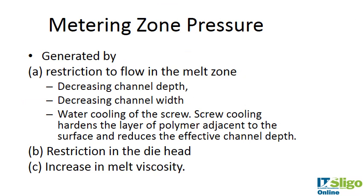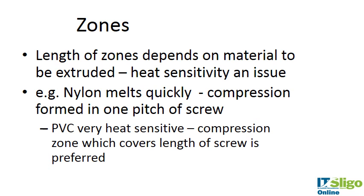In the metering zone, material is supplied at a constant rate with uniform temperature and pressure and is homogeneously mixed, so it enters the die at the right temperature and is mixed appropriately. Metering zone pressure is generated by restriction of flow: with a wide screw diameter, the channel depth and width are decreased. The screw can be water-cooled at this point, hardening the polymer layer against the barrel wall and reducing effective channel depth, creating a restriction in the die head that leads to back-pressure buildup and increased melt viscosity for a better mix. The length of these zones depends on material heat sensitivity: nylon melts quickly so compression can occur in one pitch of a screw, while PVC is very heat sensitive so the compression zone covers the full screw length.